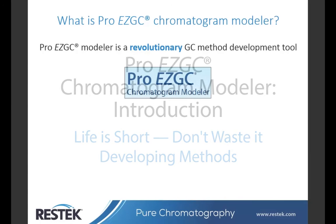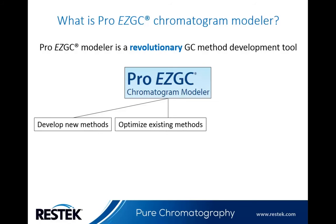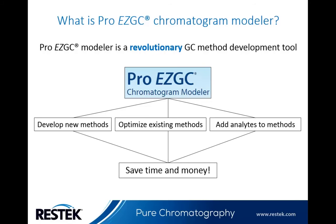So what is the ProEasy GC Chromatogram Modeler? In short, it's a revolutionary GC method development tool. With ProEasy GC Chromatogram Modeler, you can develop new methods, optimize existing methods, and add analytes to your existing methods all instantly from the comfort of your computer without ever setting up a GC, purchasing a column, or purchasing standards. So what does all of this do for you? Well, it saves you time and money, of course.